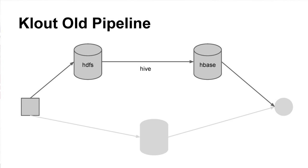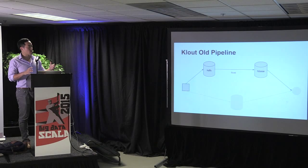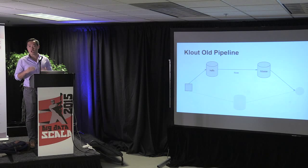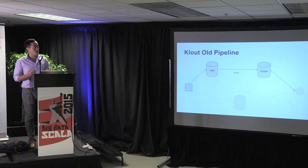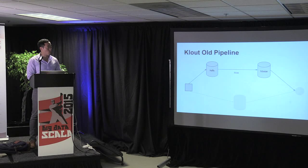This gets into the old pipeline. Before adding real-time components, we just had HDFS batch jobs in Hive going into HBase. That might look kind of janky, but why would you do anything else? The Klout score doesn't change very often — maybe one point per day — so it's not very useful to have real-time data just for the score. That's what the old pipeline was built for. This is a Lambda architecture, but just one side of it — the batch side — and these are the kinds of trade-offs you want to consider when building your data system.